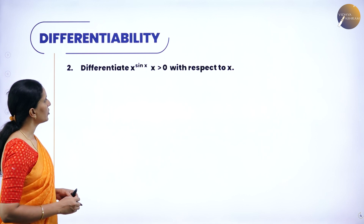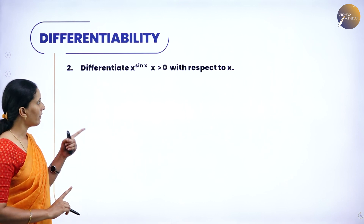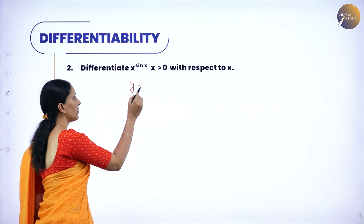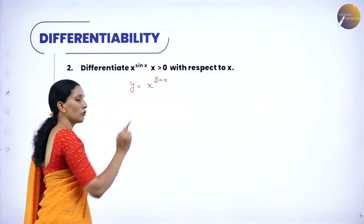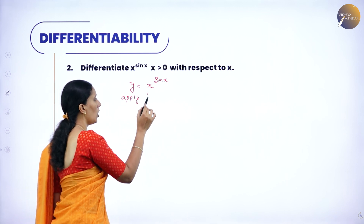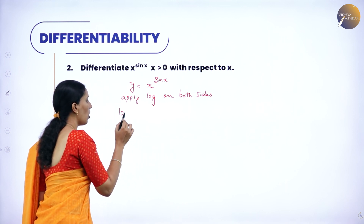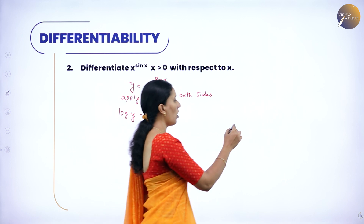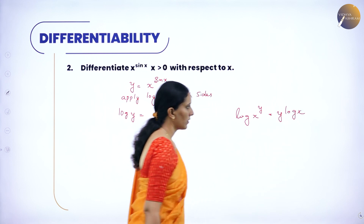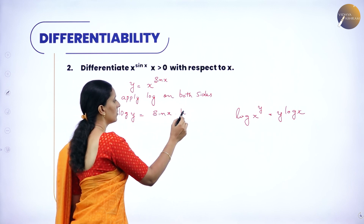Next question: differentiate x to the power sin x, where x is greater than 0, with respect to x. We have a function in exponential form. Whenever we have a function like this, use log functions on both sides. So let y equal to x to the power sin x. Apply log on both sides. Then log y equals sin x into log x, because log x to the power y can be written as y log x.